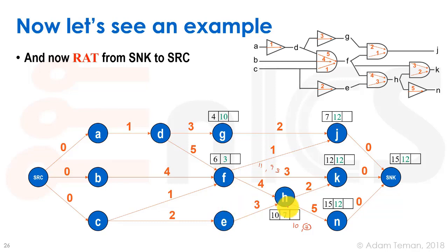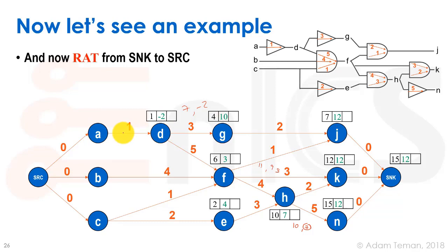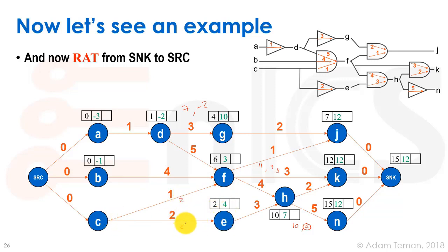For E: 7 minus 3 equals 4. For D with fan-out of two: 10 minus 3 equals 7, and 3 minus 5 equals minus 2 — we get a negative number, so the RAT at D is minus 2. For A: minus 2 minus 1 equals minus 3. For B: 3 minus 4 equals minus 1, another negative number. For C with fan-out of two: 3 minus 1 equals 2, and 4 minus 2 equals 2, so RAT at C is 2. The worst case across all is minus 3, so the source gets RAT of minus 3.